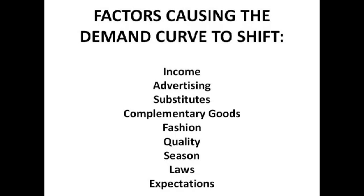Substitutes are competing goods which can be used as an alternative. So for example, a substitute for a can of Heinz baked beans might be a can of Morrison's own baked beans. Say Morrison's puts their price up — demand for Heinz baked beans is going to go up, because Morrison's good is more expensive so less people want it, but people might still want baked beans and will buy Heinz instead. We'll do more about that later when we cover cross price elasticity of demand.